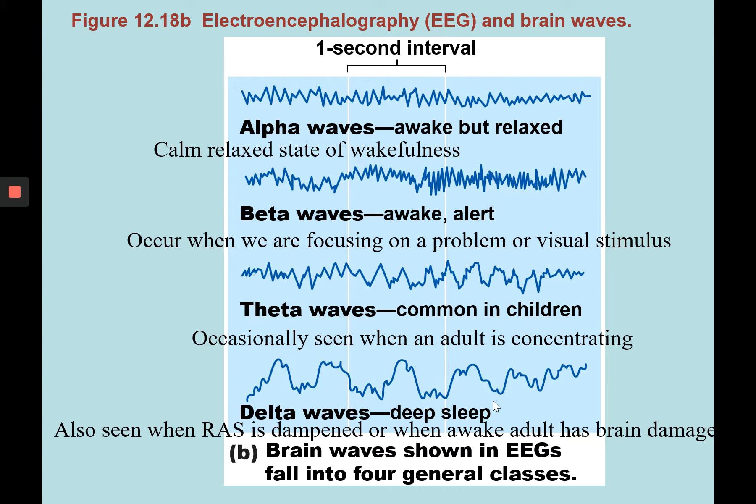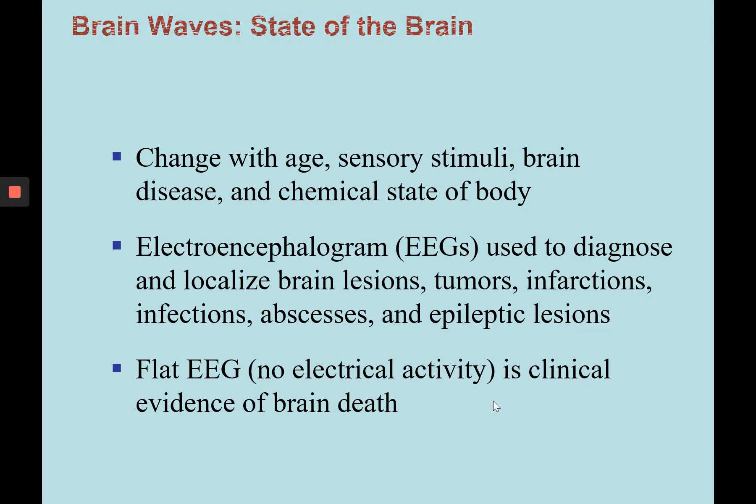Delta waves can even be seen in an awake adult who is suffering from brain damage. Brain waves tell us a lot about the state of the brain — what's happening at the synapse, how presynaptic neurons communicate with postsynaptic neurons, and how neurotransmitters travel across synaptic clefts. Brain waves change with age, sensory stimuli, brain disease, and even the chemical state of the body.